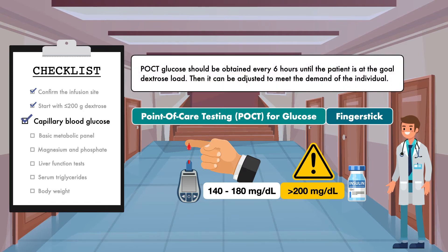POCT glucose should be obtained every 6 hours until the patient is at the goal dextrose load, then it can be adjusted to meet the demand of the individual. For example, if the patient has blood sugar that has been difficult to control and is on insulin, you may want to keep the frequency every 6 hours, or an even higher frequency of every 3 or 4 hours. However, if the patient does not have diabetes and has not had hyperglycemia at any stage of the admission, you may want to consider reducing the frequency to one time per day or less.